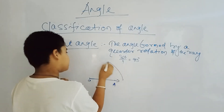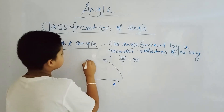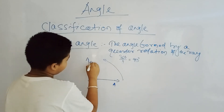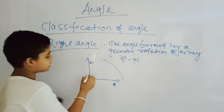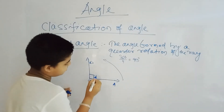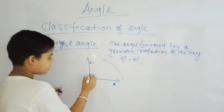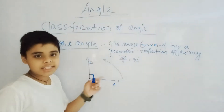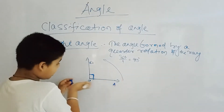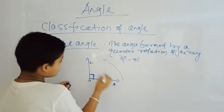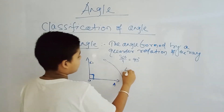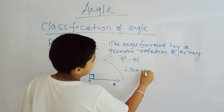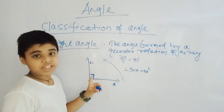So if we take it to 90 degrees, then it will be a right angle. Whenever there is an angle of 90 degrees, we denote it this way, and angle BOA is equal to 90 degrees, as we can see in this figure.